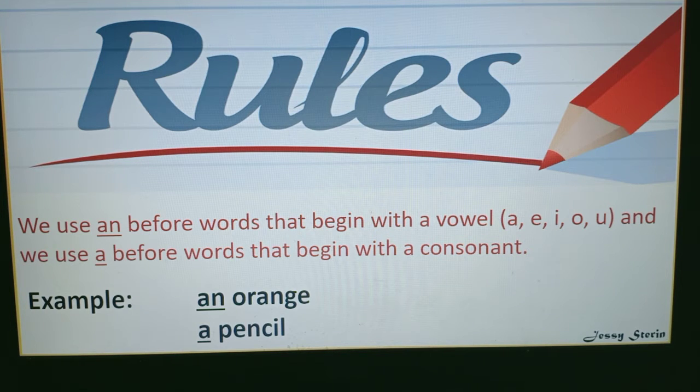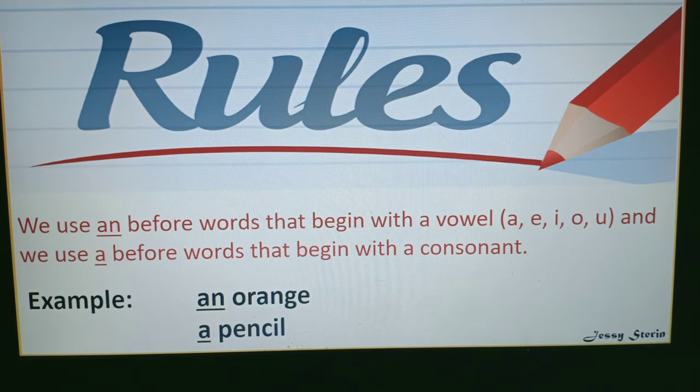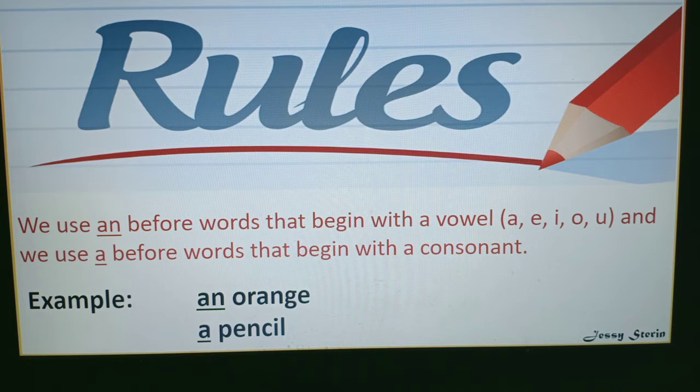The rule tells us: when a word starts with a vowel (a, e, i, o, u), we write 'an' before it. If a word starts with a consonant, we write 'a' before it. Let's take examples: 'orange' starts with 'o', which is a vowel, so according to the rule we will use 'an' before it - 'an orange'. Second example: 'pencil' starts with 'p', which is a consonant, so we will use 'a' - 'a pencil'.